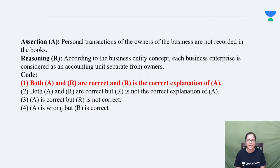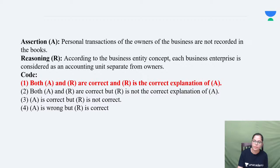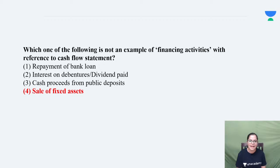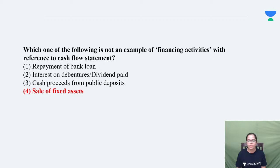The correct answer is of course option A — both A and R are correct and R is the correct explanation to A. In cash flow there are three types of activities: financing activities, investing activities, and operating activities. The sale of fixed assets would be an investing activity, not a financing activity. That is the distinction.